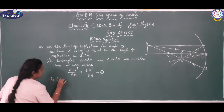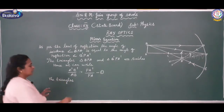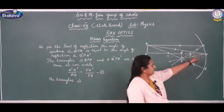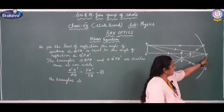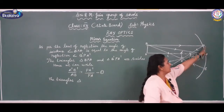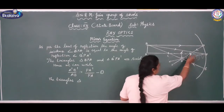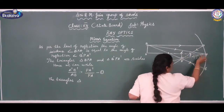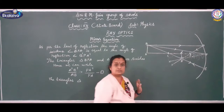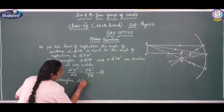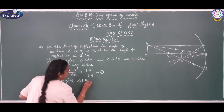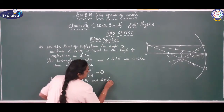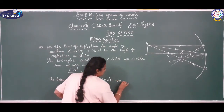There are two more similar triangles to consider: triangle DPF and triangle B'A'F. These two triangles are also similar. So from those triangles we can write: A'B' / PD = A'F / PF. This is equation 2.